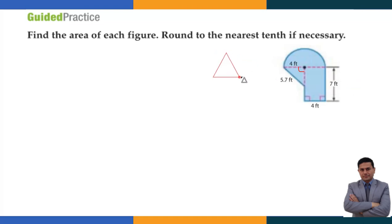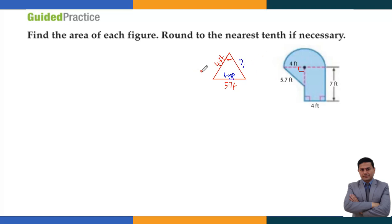I take the triangle separately. The 90 degree angle is here. One side is 4 feet and the other given side is 5.7 feet, which is the hypotenuse. I don't need the hypotenuse for area — I need the base and perpendicular. So using the Pythagorean theorem: c² = a² + b², which means 5.7² = 4² + b².